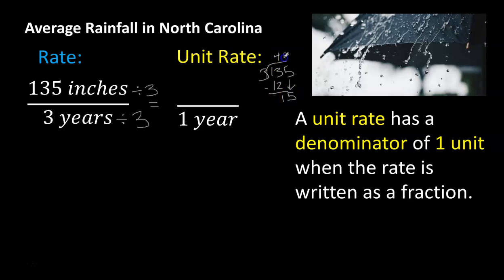Three goes into 15 five times. Exactly. Five times three is 15. When I subtract I get zero and there's no number to bring down. So 135 divided by three gives us 45. 45 inches.